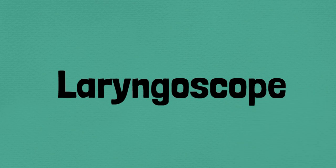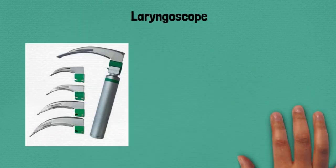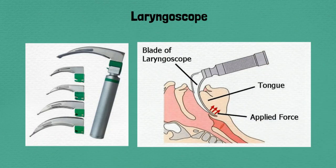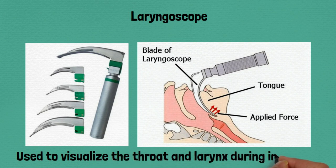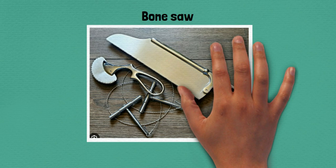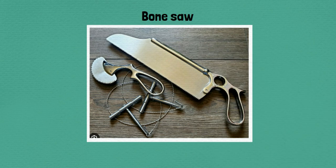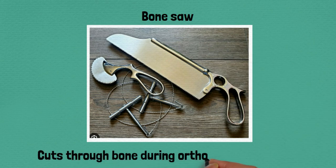Seventy-four: laryngoscope, used to visualize the throat and larynx during intubation. Seventy-five: bone saw, cuts through bone during orthopedic procedures.